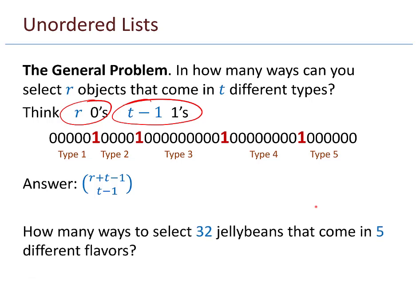Here's just another real quick example. How many ways to select 32 jelly beans that come in five different flavors? I imagine 32 zeros. Now five different flavors means I have four ones that I will be placing. So 32 plus 5 minus 1 choose 5 minus 1. That's 36 choose 4. So it turns out 58,905.